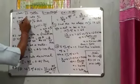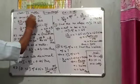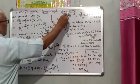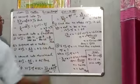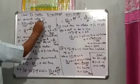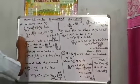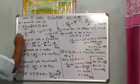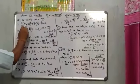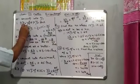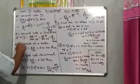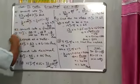Good morning dear students. Class 7th Maths Percentage, Exercise 10E. Question number 1: Convert into Percentage. First part: 47 upon 100 into 100%, that is 47%. It is the answer.